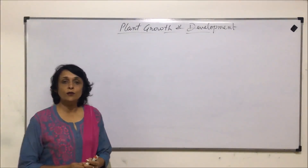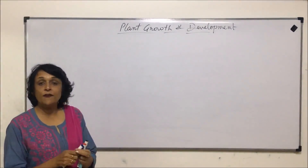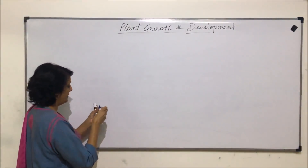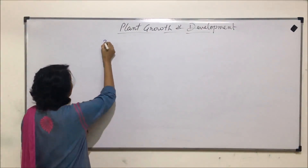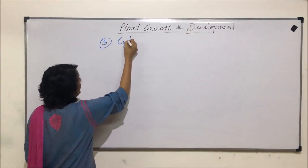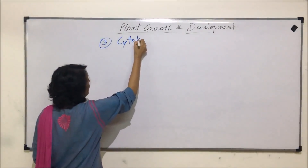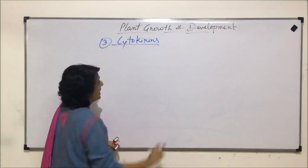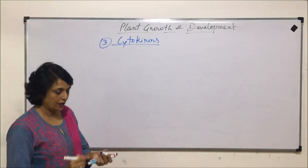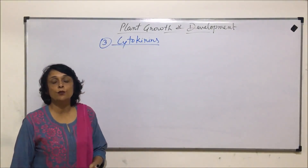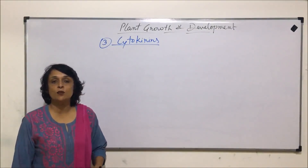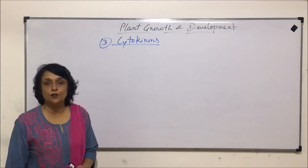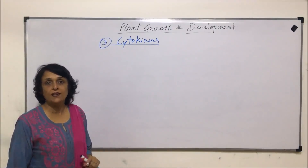Let us now talk about the next phytohormone, that is cytokinin. Cytokinins are the substances which are believed to enhance the process of cytokinesis, that is, cytoplasmic division during cell division.